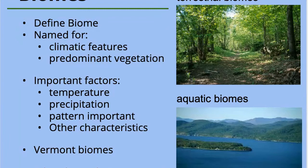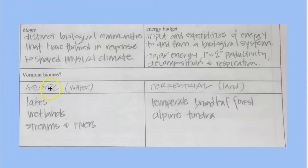So in any case, if we were to connect that to place where we are in Vermont, we have both aquatic and terrestrial biomes. We have the lake, Lake Champlain. We also have abundant wetlands and then we have streams and rivers.